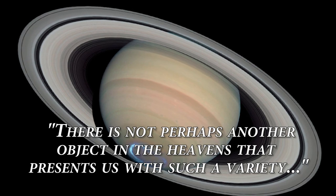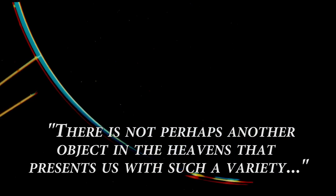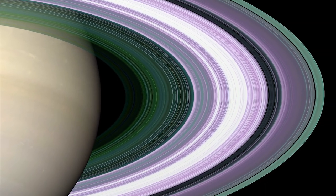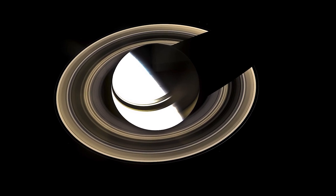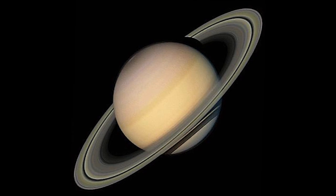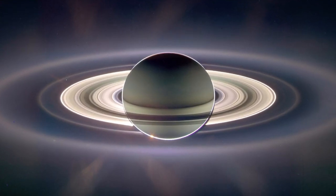Quite a grand description of the planet Saturn was expressed by Herschel after careful observations through his telescope. There is not perhaps another object in the heavens that presents us with such a variety of extraordinary phenomena as the planet Saturn, a magnificent globe encompassed by a stupendous double ring, attended by seven satellites, ornamented with equatorial belts, compressed at the poles, turning upon its axis, mutually eclipsing its ring in satellites, and eclipsed by them.